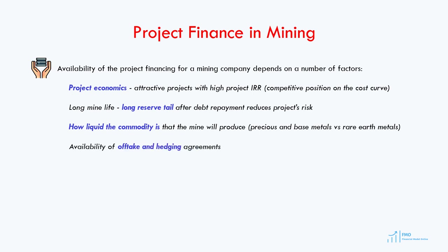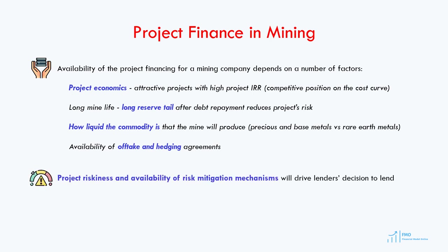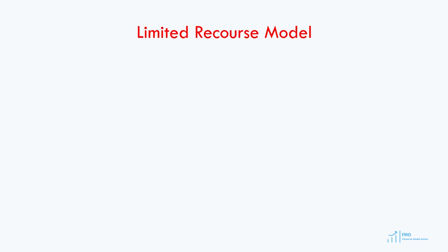Lenders also want to see the availability of offtake and hedging agreements, since these types of agreements reduce the revenue risk, and whenever possible, lenders will insist that the mine hedges a portion of its output. In the end, lenders want to see what kind of risks the project has and if there is a way to eliminate or mitigate those risks. What we saw when we discussed the project finance structure is non-recourse lending.